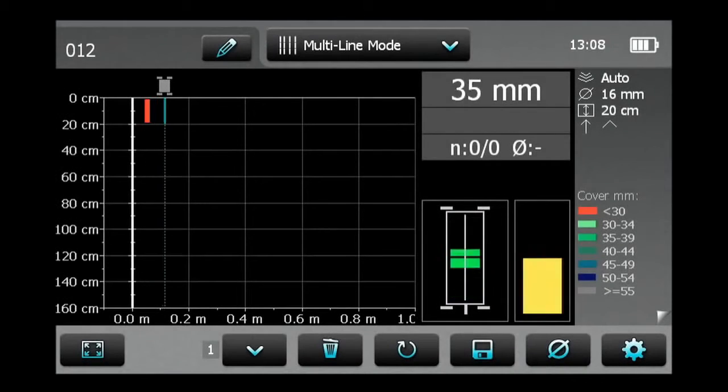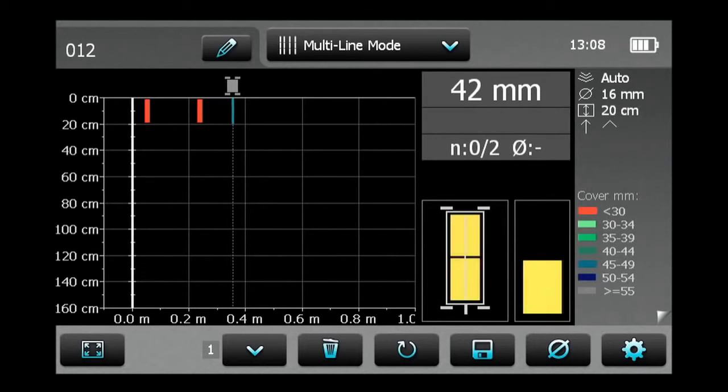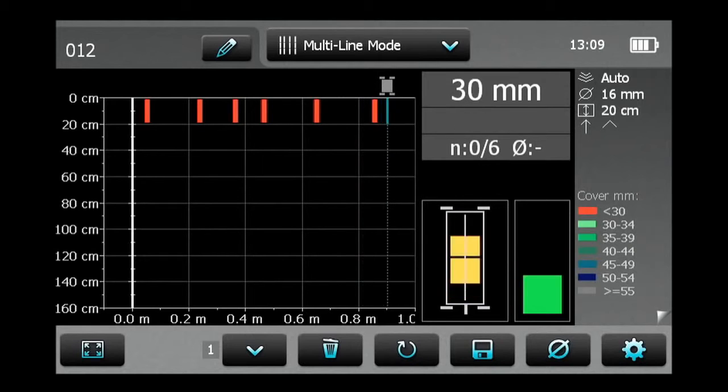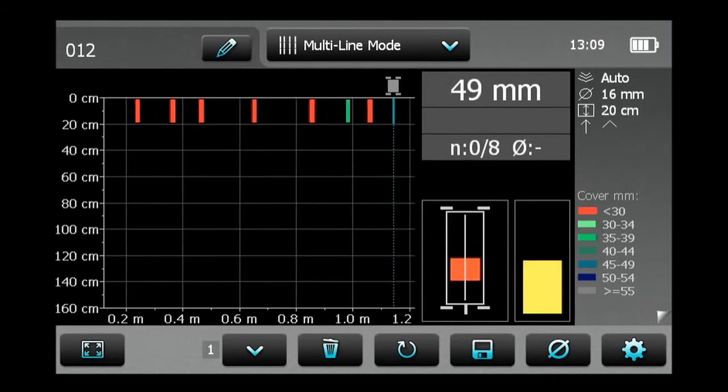The multi-line mode is used when scanning over rectangular areas. The color classification shows either the different cover depths or the rebar diameter sizes in one view.